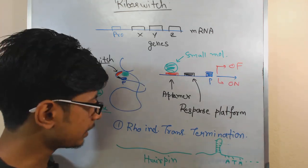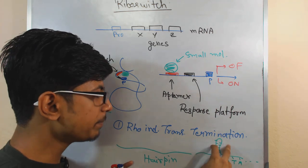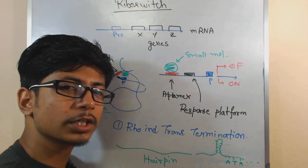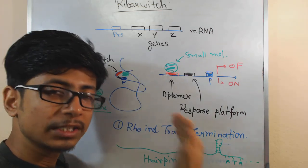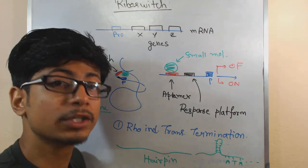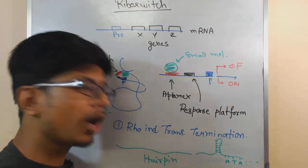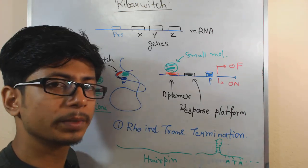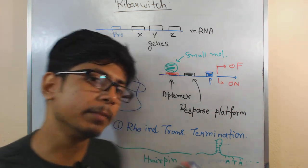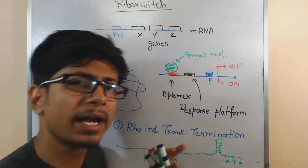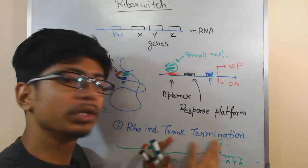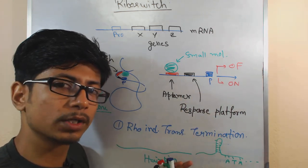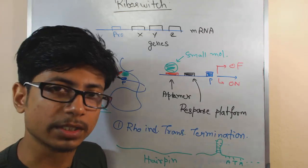In this case, what the riboswitch does is it can form this hairpin structure very fast — even before the transcription of all those mRNA segments — forming a premature hairpin-like structure that stops the process of RNA transcription there. Premature transcription termination is conducted by the riboswitch in cases where the mRNA is not required in that cellular context, so the protein that would be translated is not needed and the process is halted.